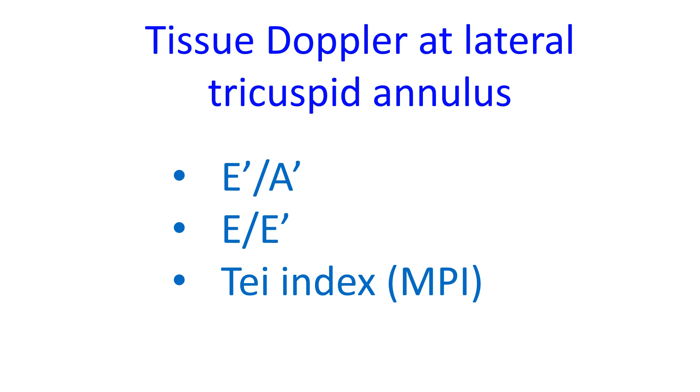As on the left side, absence of A wave in atrial fibrillation would mean that E-A ratio cannot be measured.